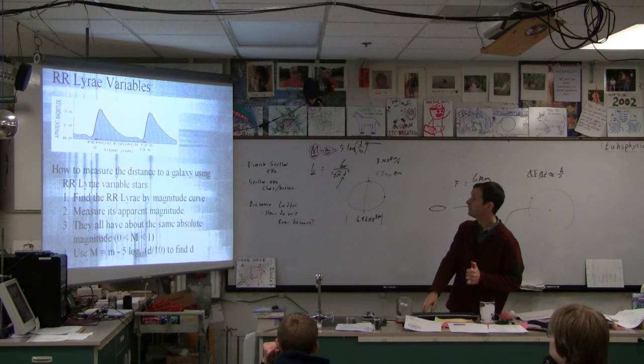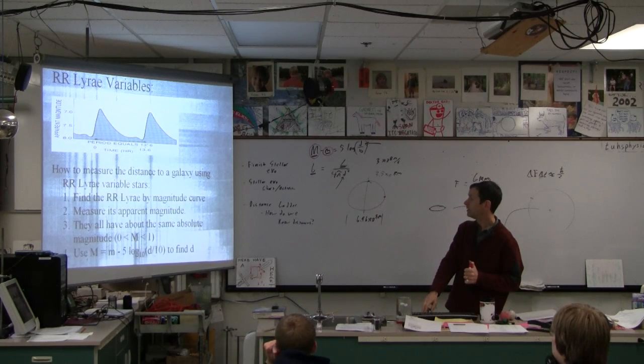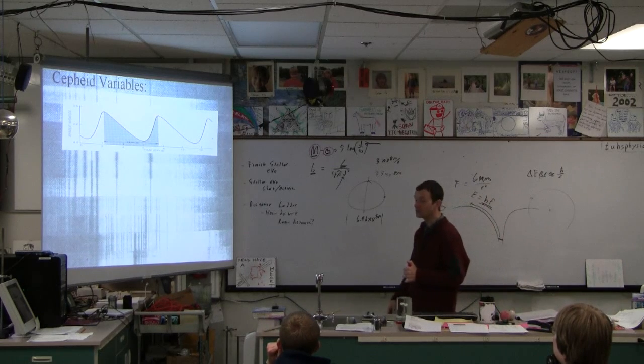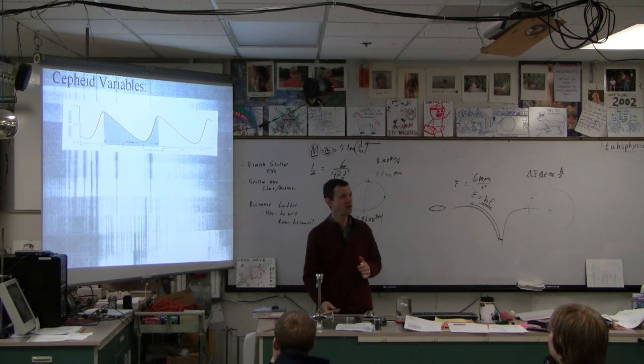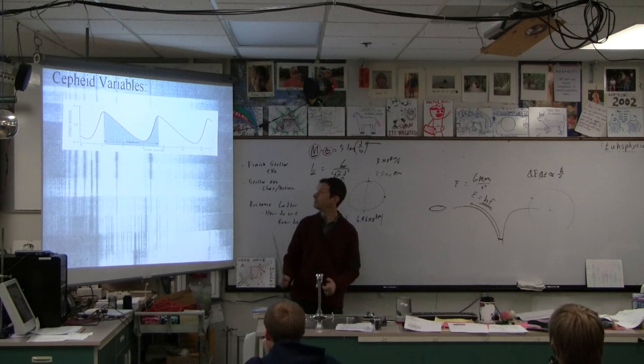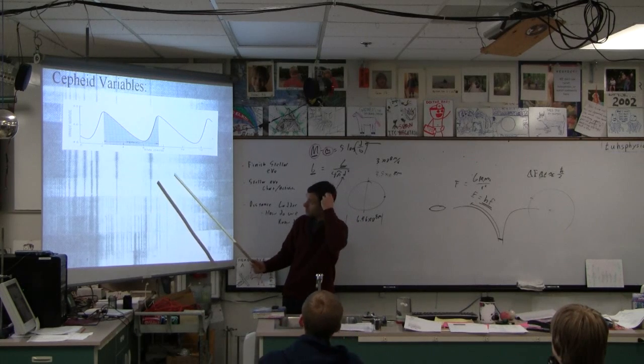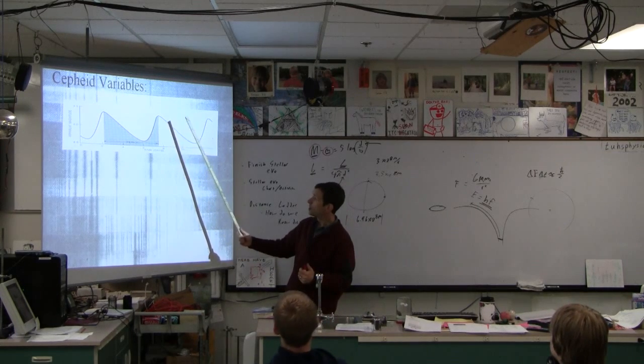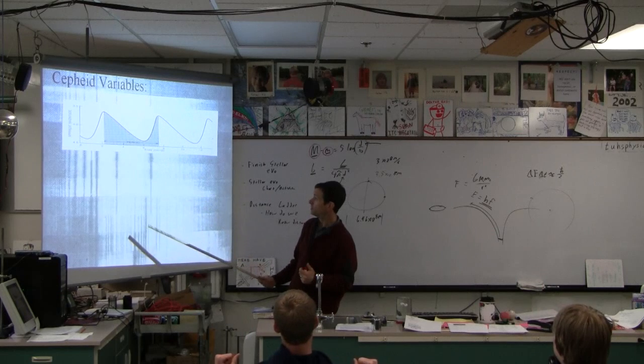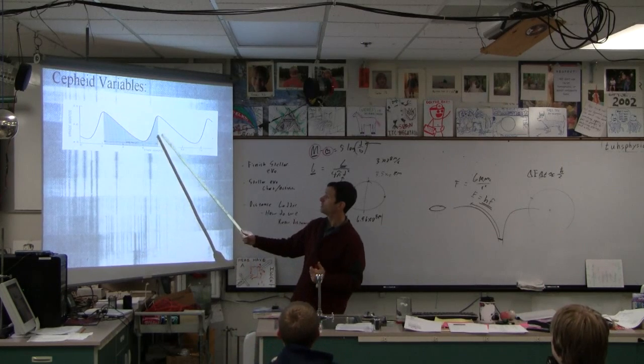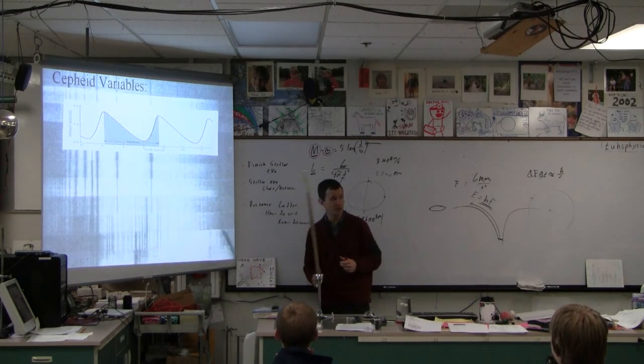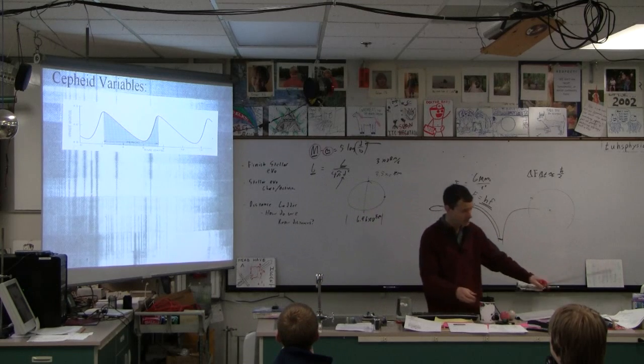So that's one way, right? Cepheids, these are the ones, by the way. If you're talking about finding distance to a star, this is the way to do it. These are supergiant, superbright stars, so in a distant galaxy we can see Cepheid variables.